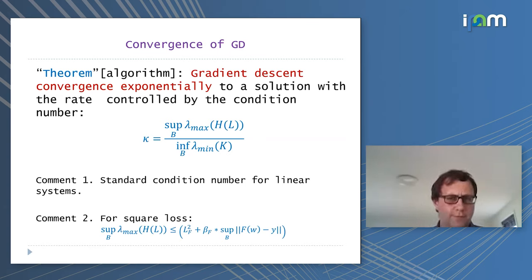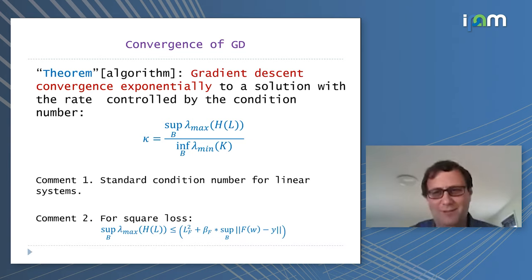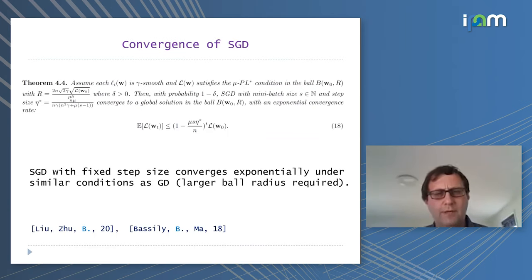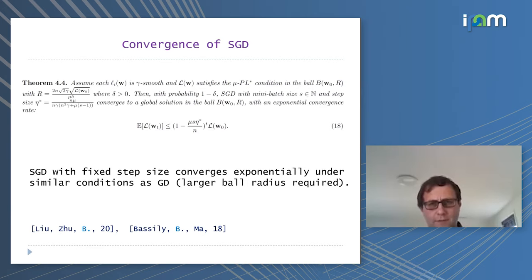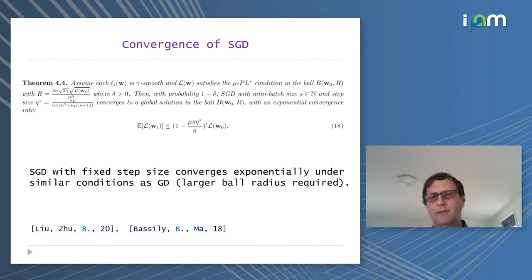We get convergence of gradient descent from this result. You can essentially prove the same result for stochastic gradient descent — under the same condition, SGD converges exponentially with some probability. The rate is different and the condition needs to be a little stronger (we need a larger ball), but otherwise it's the same. This relies on results by Bassily, Goren, and Ma.